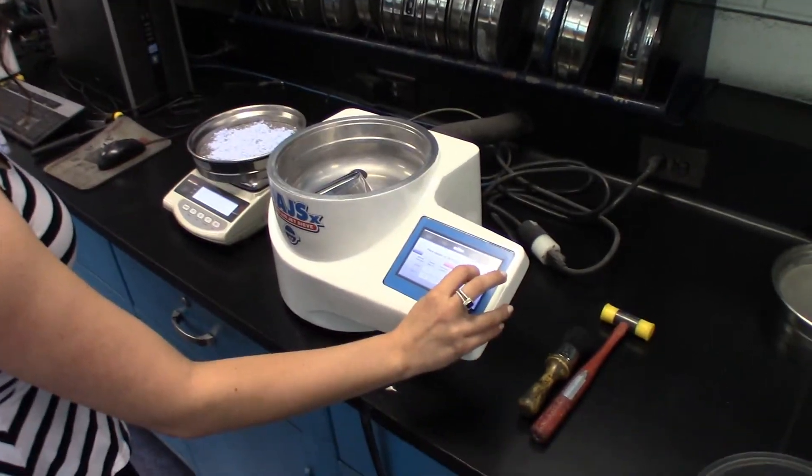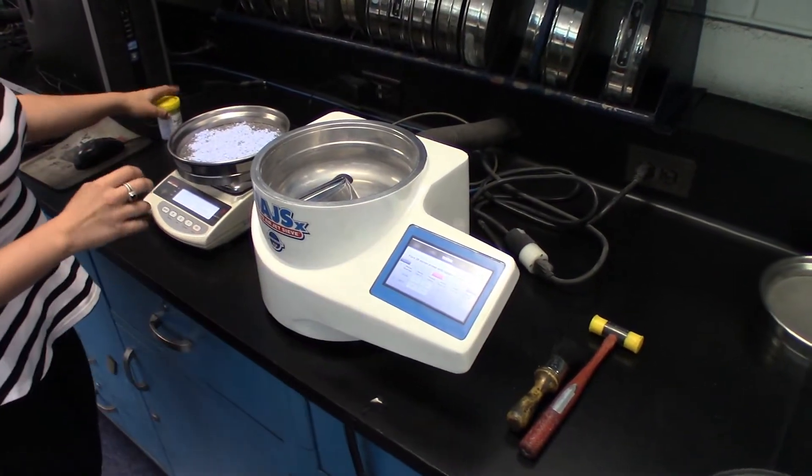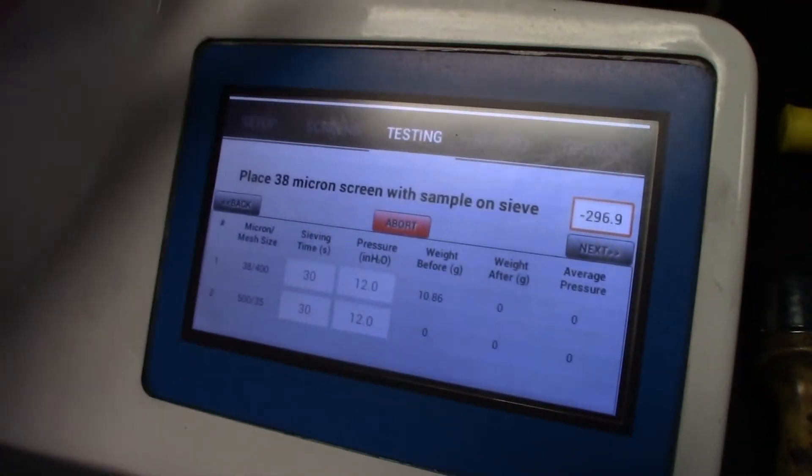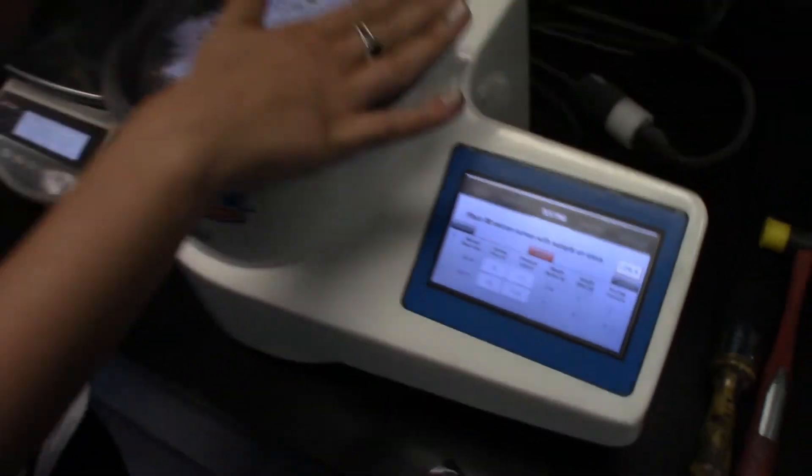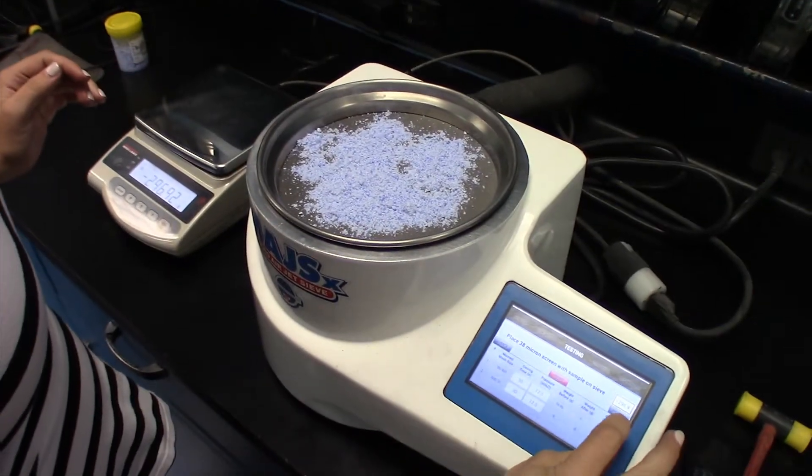Press next on the air jet sieve. You always want to make sure it's sitting down. Press next.